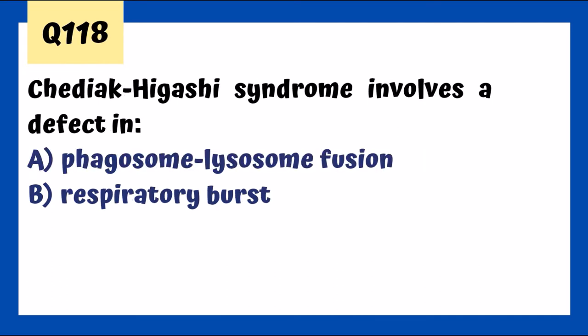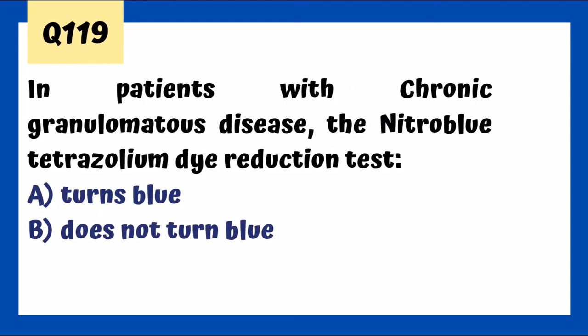Chédiak-Higashi syndrome involves a defect in phagosome-lysosome fusion — a defect in the LYST gene. Neutrophils can reach the infection site but can't kill, causing pyogenic infections. Histology shows giant granules representing failed migration and aggregation. Albinism is also seen due to a trafficking defect for pigments. The nitroblue tetrazolium dye reduction test does not turn blue in chronic granulomatous disease — these patients lack NADPH oxidase and cannot convert oxygen to superoxide.